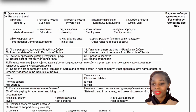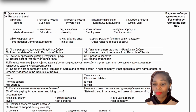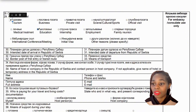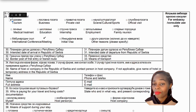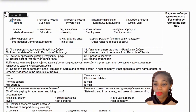Slot number twenty-nine is the purpose of travel. Options include tourism, business, private visits, science, culture, sports, official visit, medical treatment, education, internship, employment, family reunion, international conferences, initial visa visit, and other reasons. Tick whichever applies to your trip.